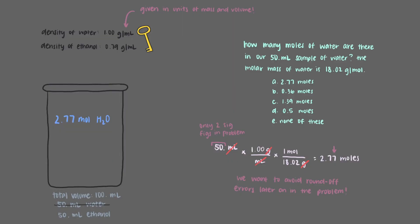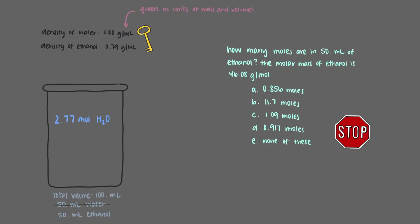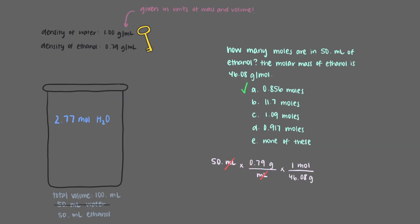Now let's do the same thing for ethanol. How many moles are in 50 milliliters of ethanol? The molar mass of ethanol is 46.08 grams per mole. There are 0.856 moles of ethanol in 50 milliliters. The process is exactly the same as how we calculated the number of moles of water, but using the density and the molar mass of ethanol. We start with 50 milliliters of ethanol, use the density to cancel out units of volume and get to units of mass, then multiply by the molar mass of ethanol to cancel out the gram units and be left with moles. We'll add 0.856 moles of ethanol to our beaker as well.